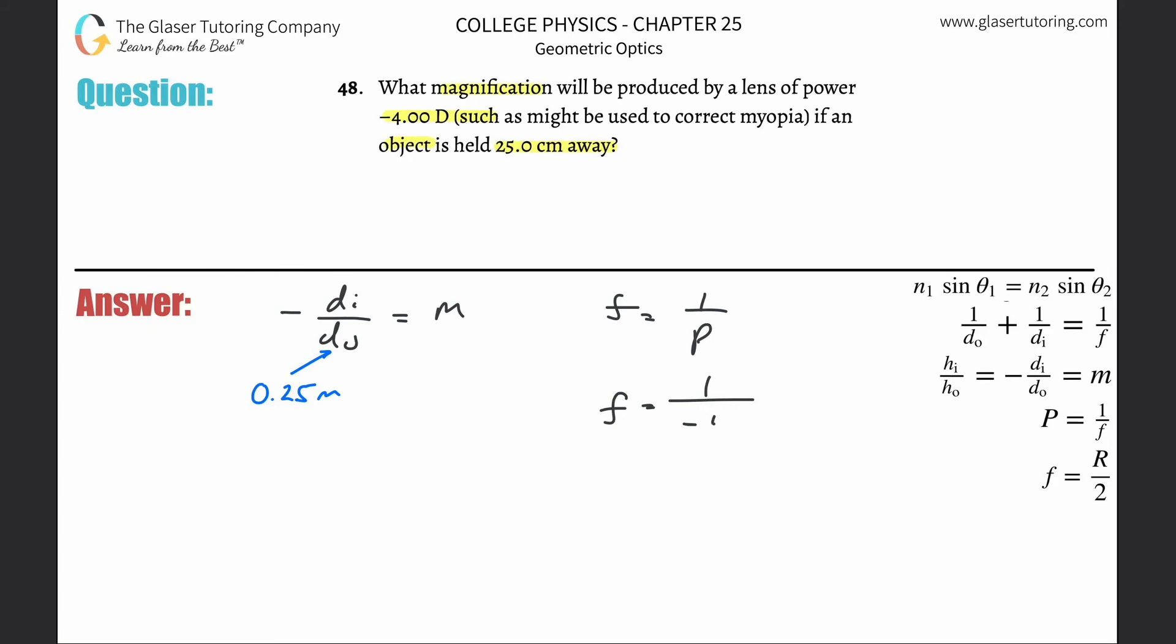So one divided by that -4 diopters. The focal length here is now going to be one divided by -4, which is -0.25 meters.